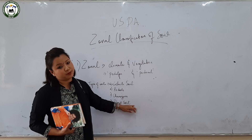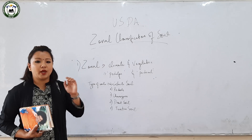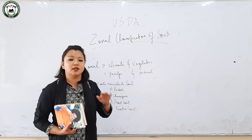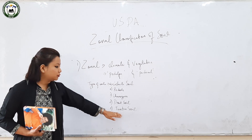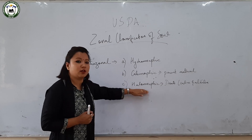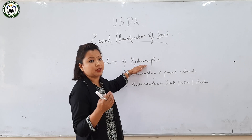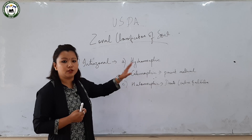Moving on to tundra soil: tundra soil is developed in the arctic region where the soil remains frozen over eight months of the year. Due to the frozen condition, marshy or boggy conditions prevail, making tundra soil very infertile in nature. The intrazonal classification consists of three types: hydromorphic, calcimorphic, and halomorphic. Hydromorphic soils are developed under waterlogged or anaerobic conditions, already explained in the gleying process.